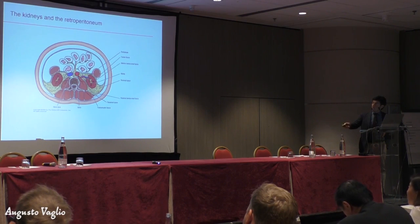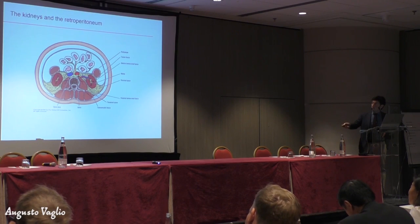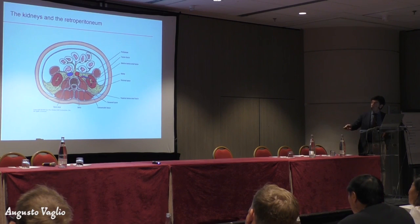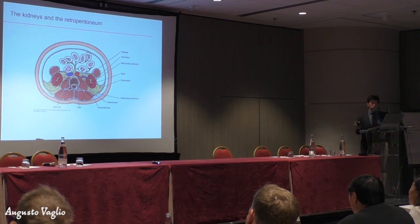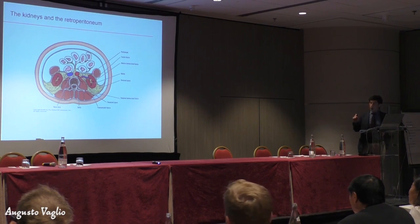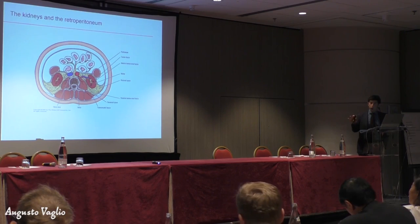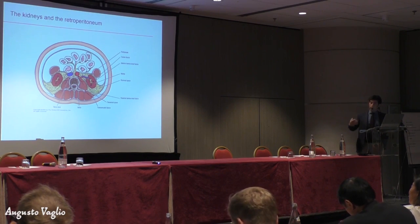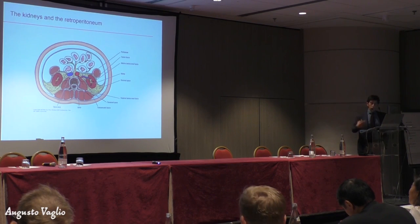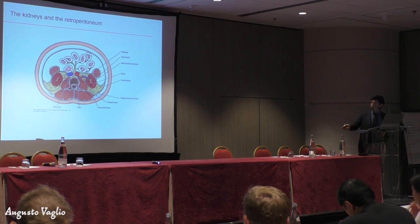The kidneys, the inferior vena cava, the aorta, and the arteries and veins that go from the aorta into the inferior vena cava are all located here. And this is where ECD mainly affects the abdomen. The infiltration can also extend to involve the gut itself, but most of the problems arise when the disease is located in this area.